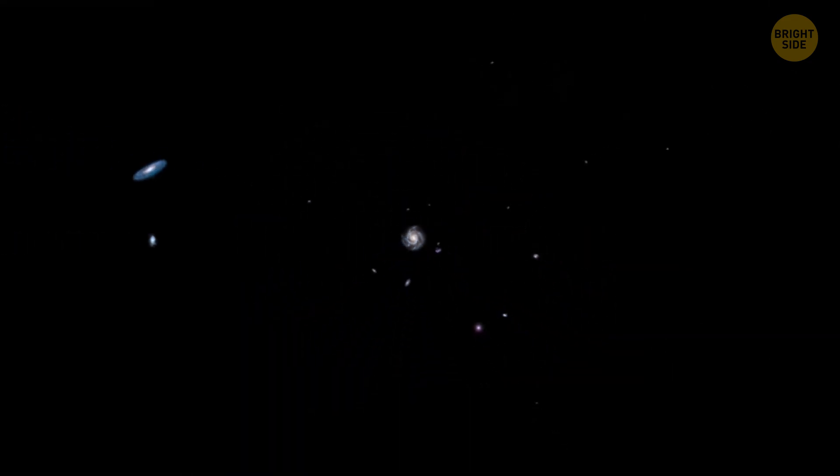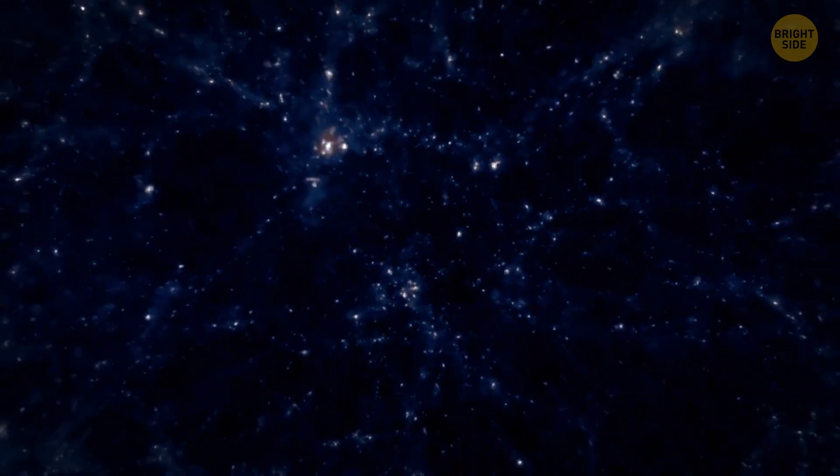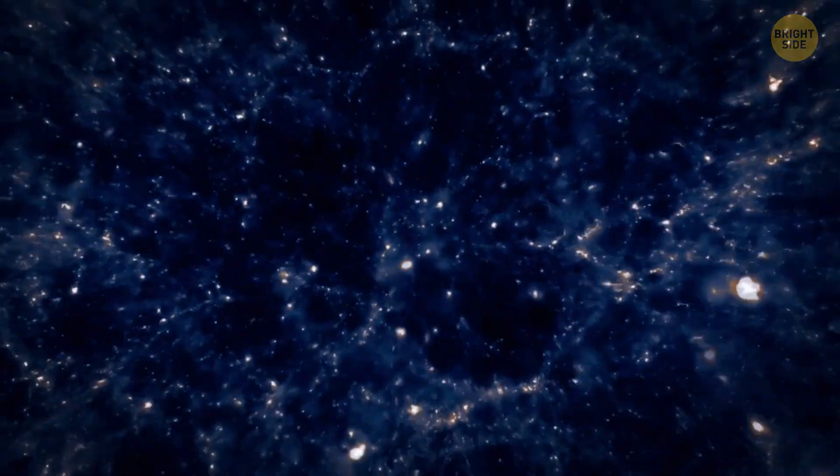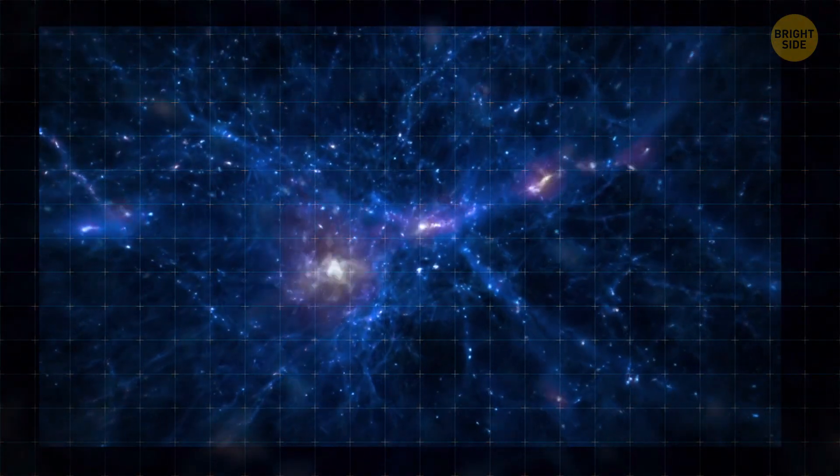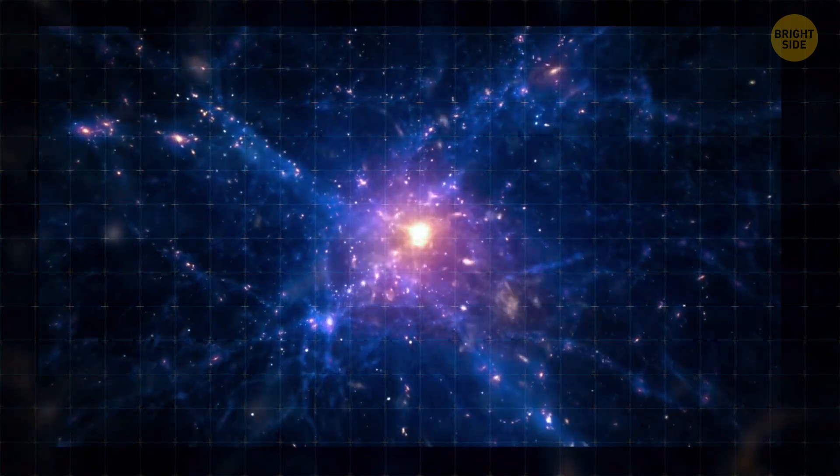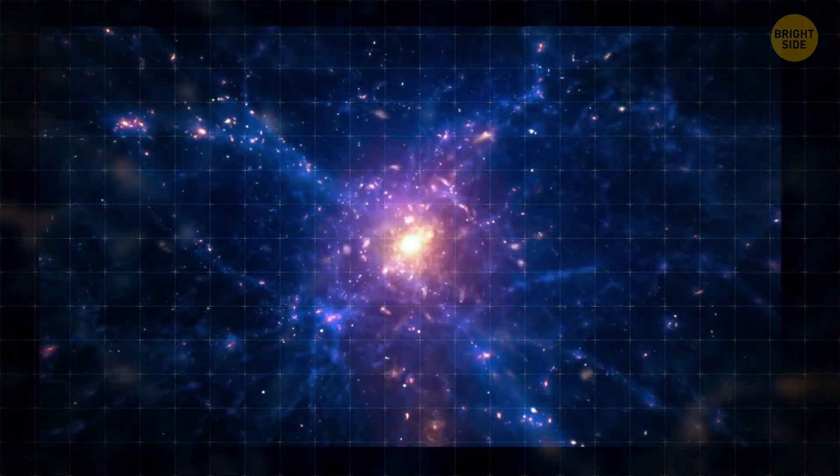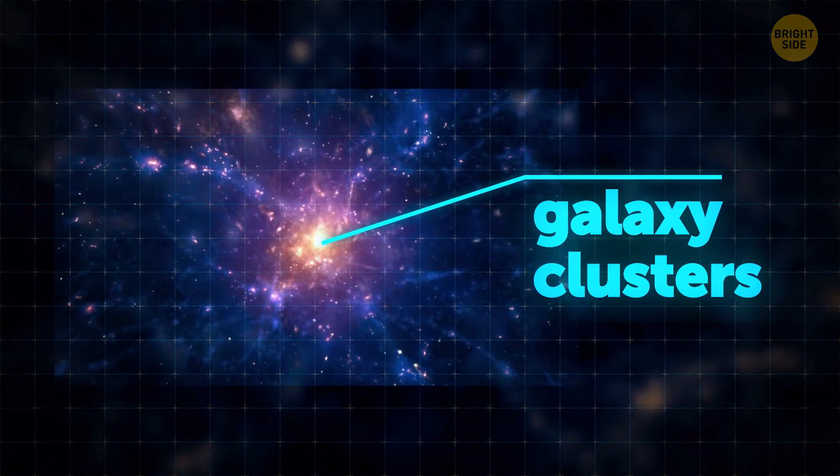Now, we know that galaxies look like a giant web. Most of them are parts of long structures called filaments. Those wind through the cosmos, and when they meet, they form regions with a high concentration of galaxies. These regions are what we know as galaxy clusters.